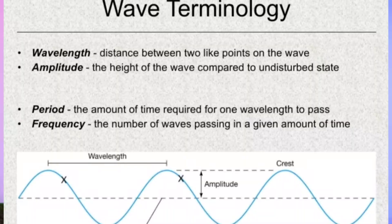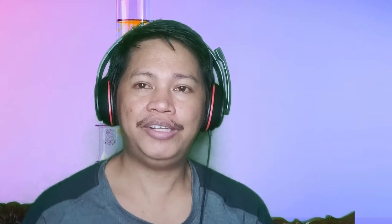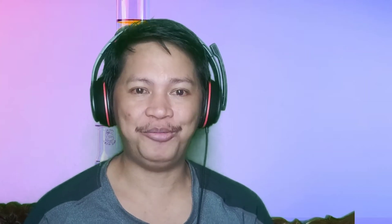Let me define these terms. Wavelength is the distance between two like points in the wave. Amplitude is the height of the wave compared to the undisturbed state. Frequency is the number of waves passing in a given amount of time. And period is the amount of time required for one wavelength to pass.